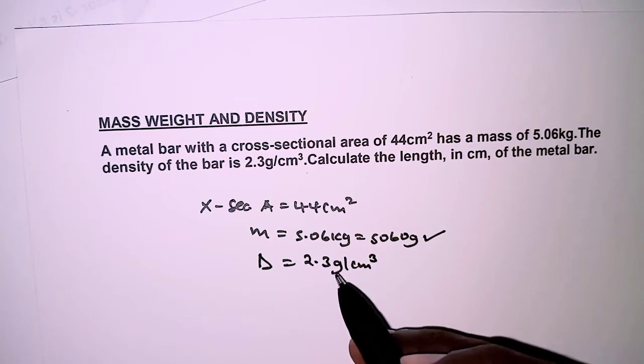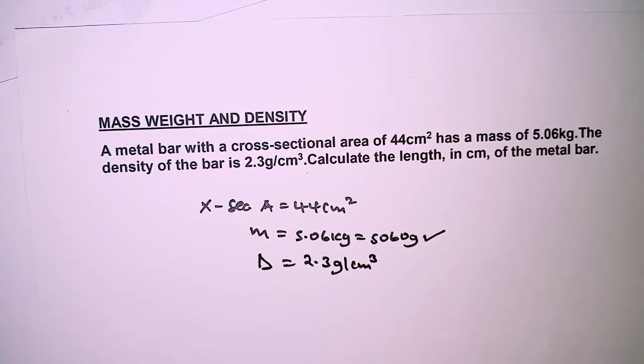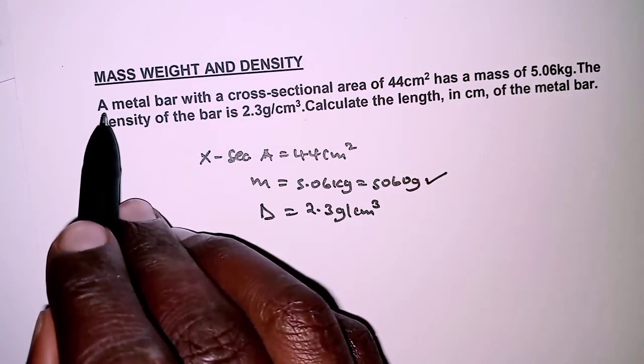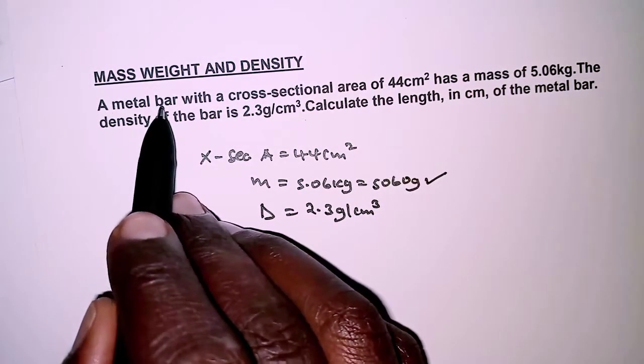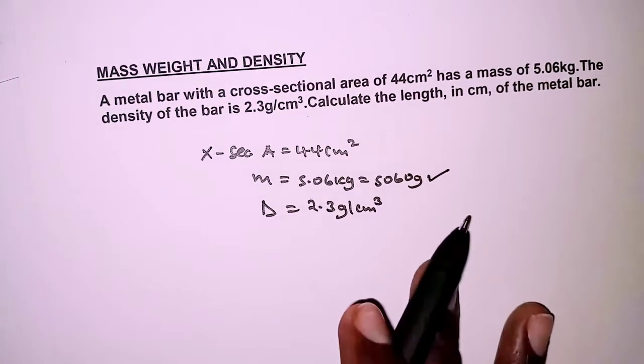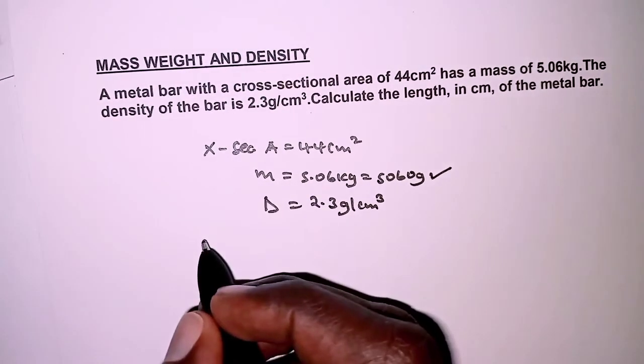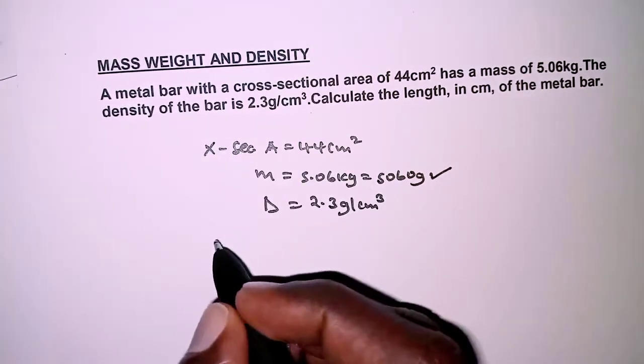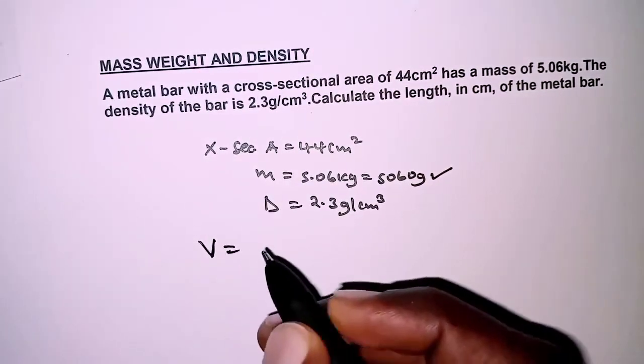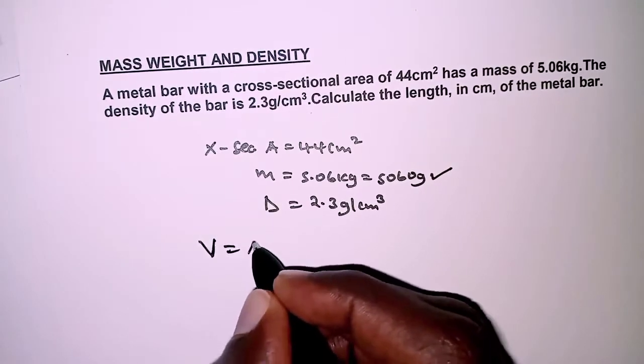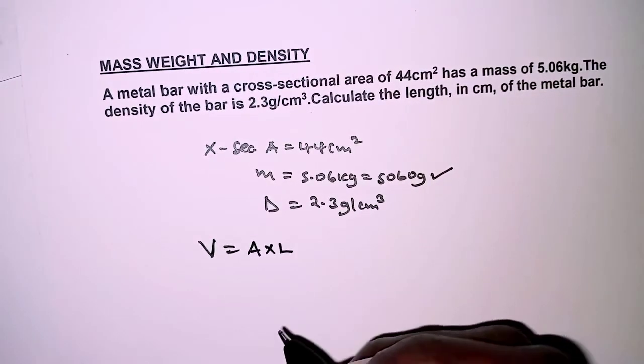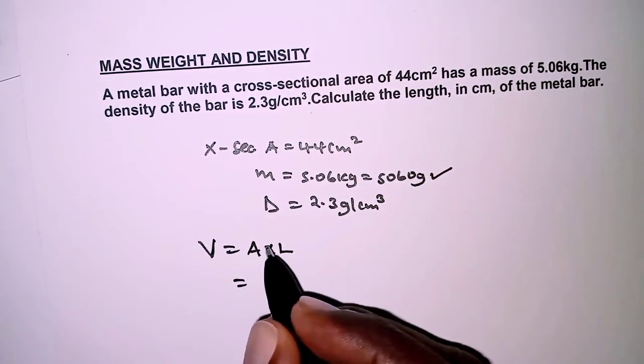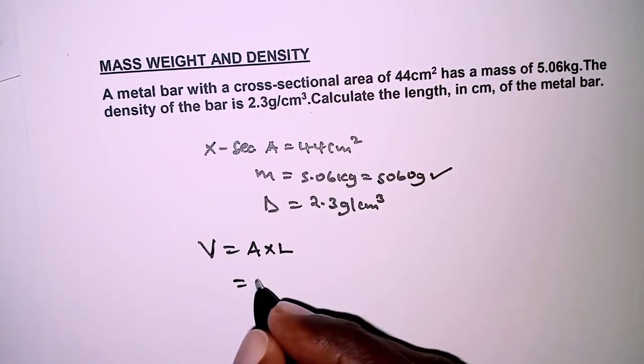Given that this is a metal bar, we expect that it has a uniform cross-sectional area, and that simply means it is a prism. The volume of a prism is obtained as cross-sectional area times length, and the cross-sectional area is 44 by the length which we need to find.